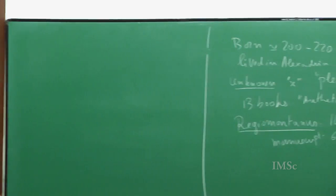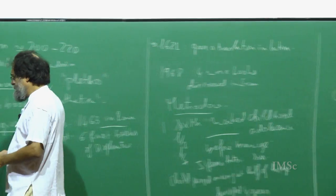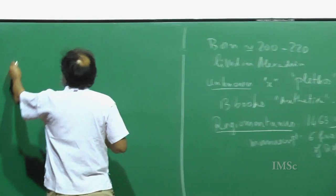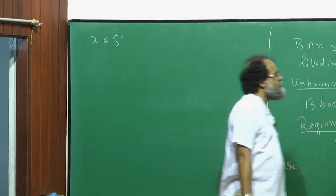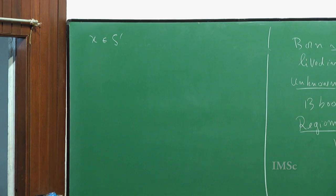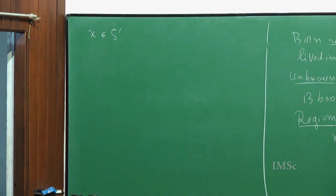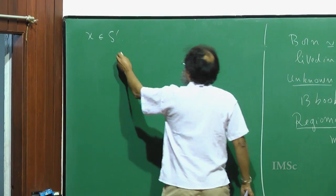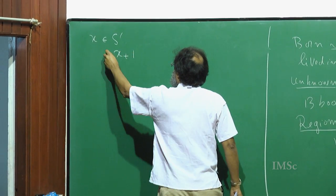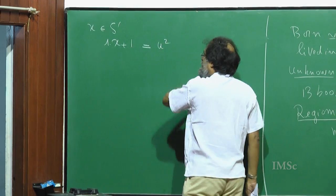Let us try to understand what happens from these properties. I take x supposedly belonging to S prime, the enlarged set. So you have x plus 1, 1 times x plus 1 which is x plus 1, is a square.